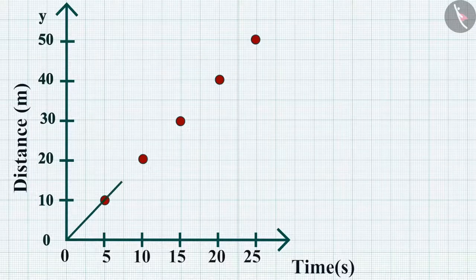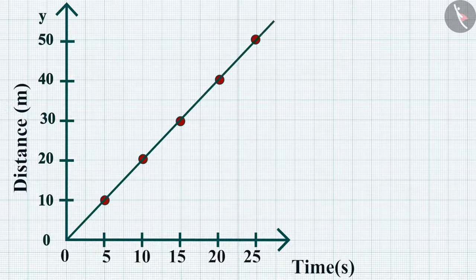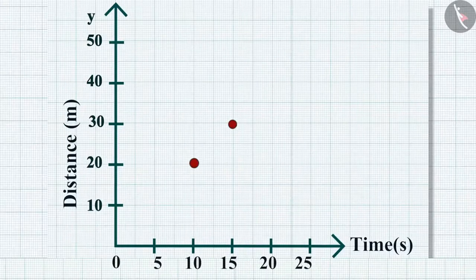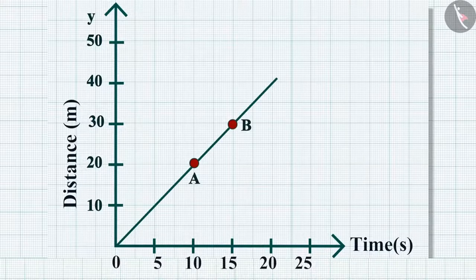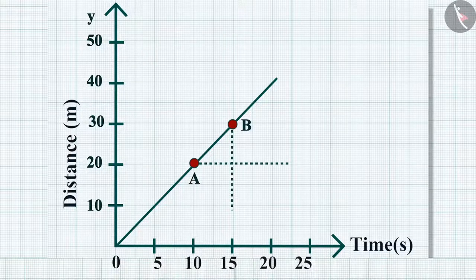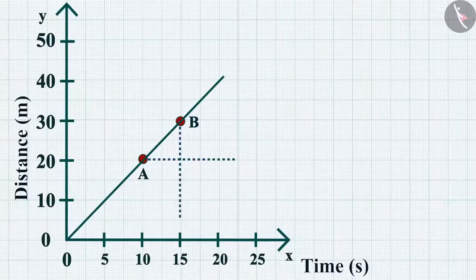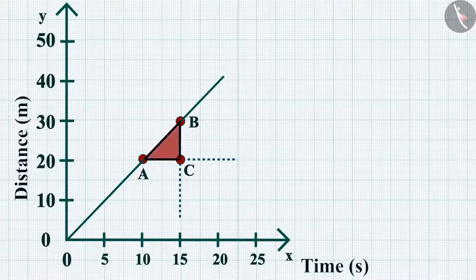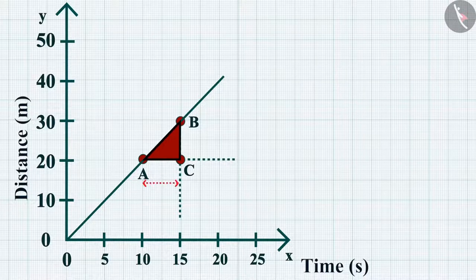To calculate speed from the distance-time graph, choose two points A and B. Draw a line parallel to the x-axis from point A and another parallel to the y-axis from point B. These two lines meet at point C, forming triangle ABC, where AC denotes the time interval and BC corresponds to the distance.